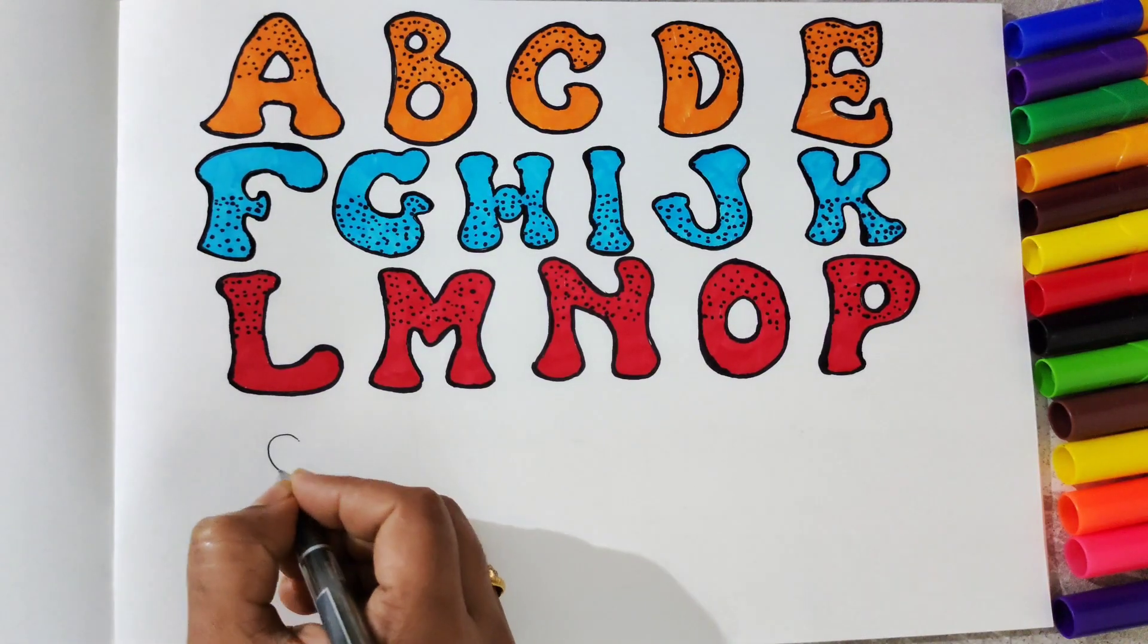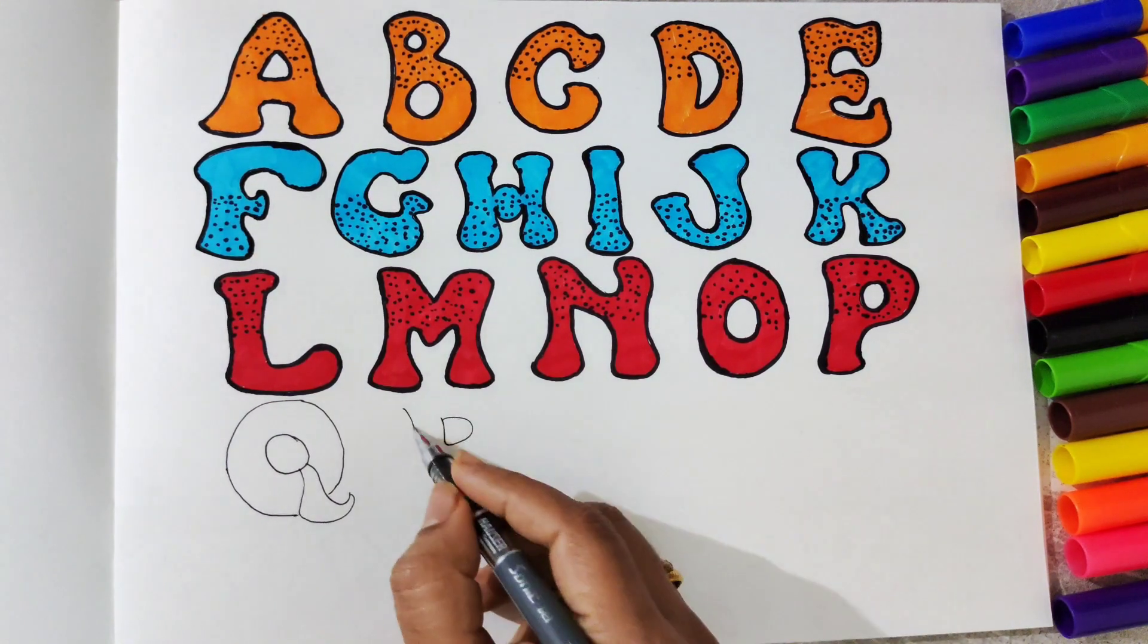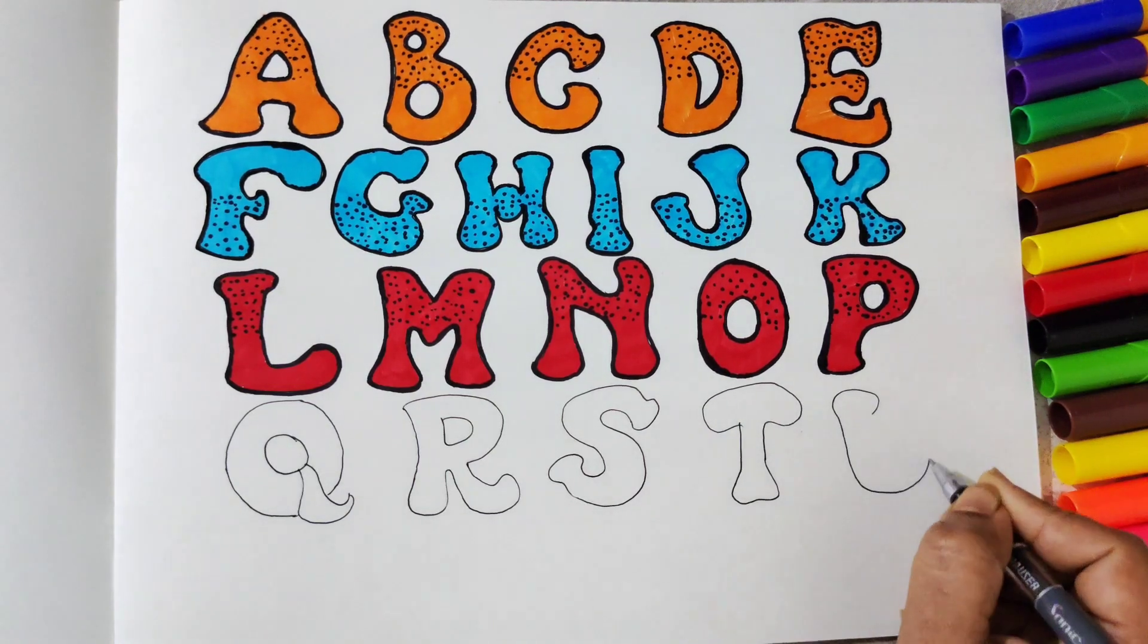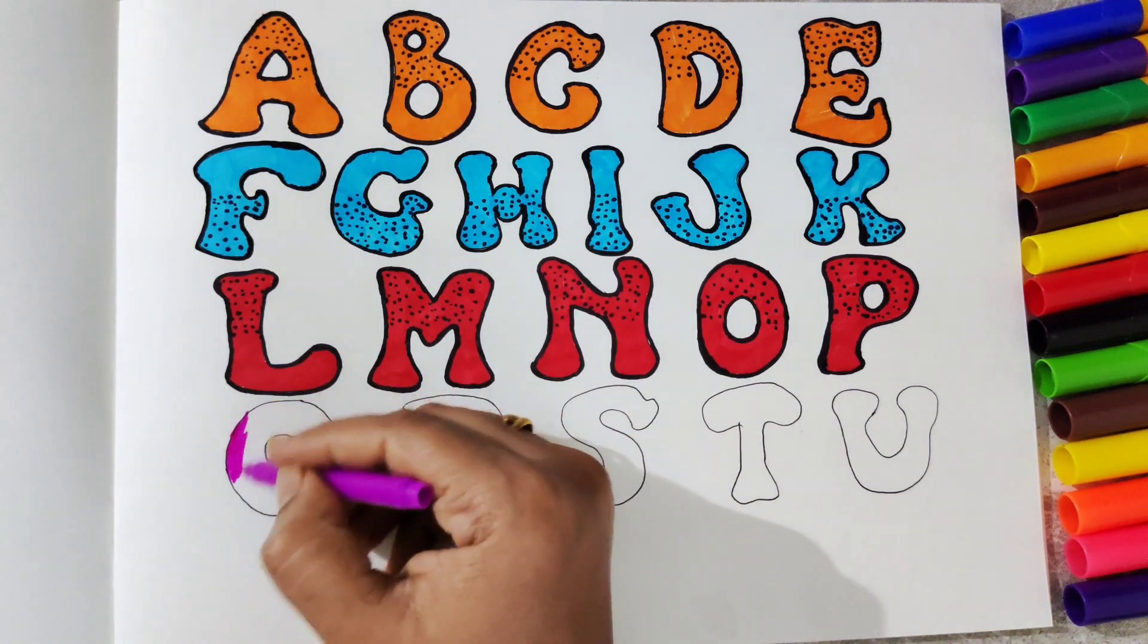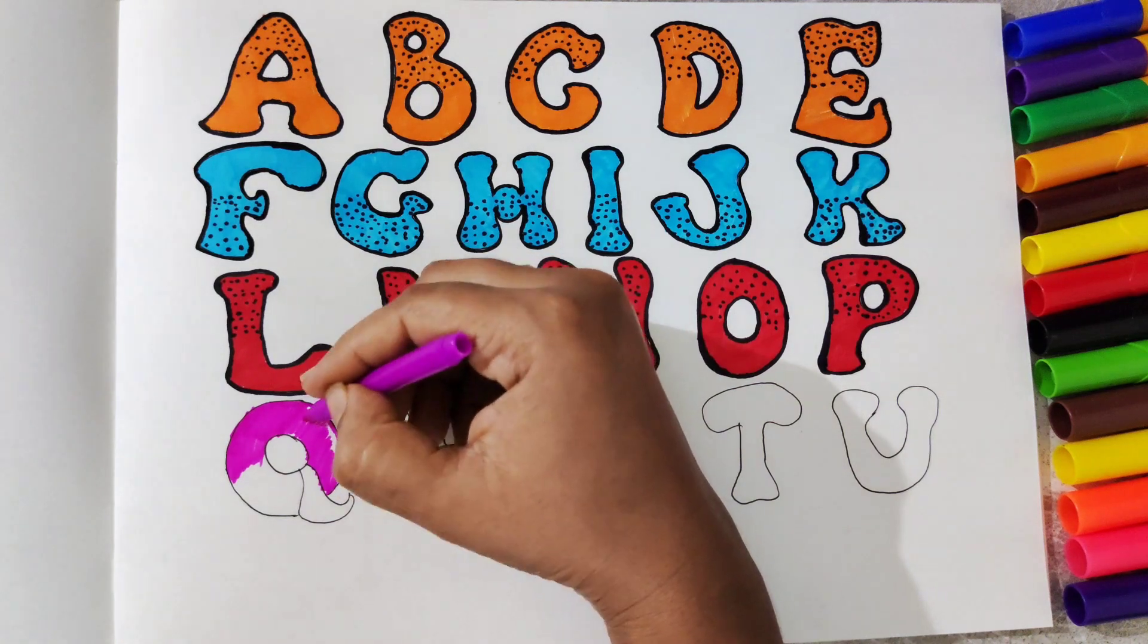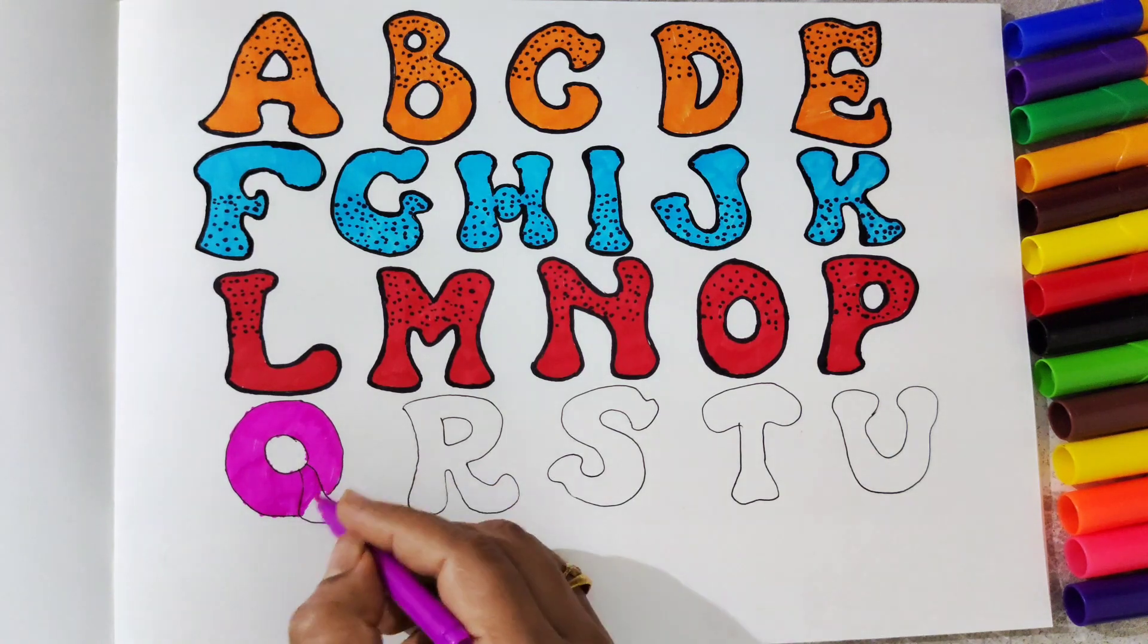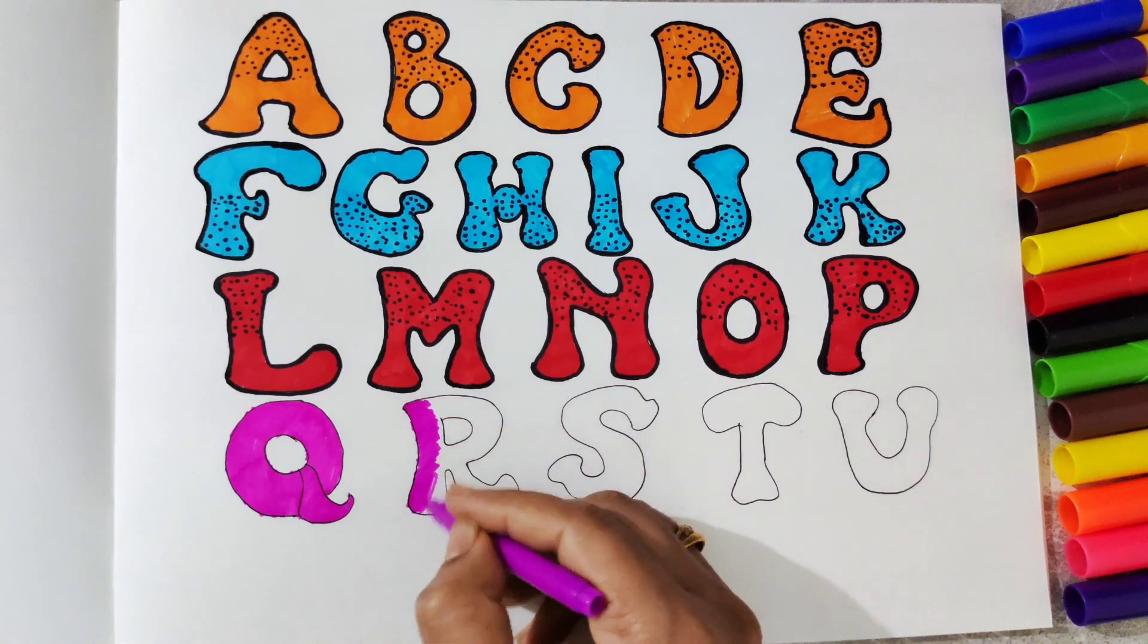Let's start sketching rest of the alphabets. Q, R, S, T, U. Wow, we have completed sketching of alphabets. Now let's color. I have chosen pink color in these five letters. So let's start with Q. Wow, Q is looking amazing in pink color. My Q alphabet is almost ready. Now let's start with alphabet R.